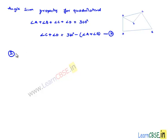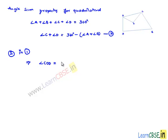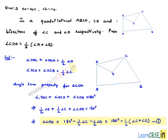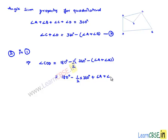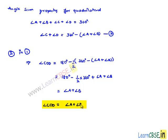Now, substituting equation number 2 into equation number 1, we get angle COD equals 180 degrees minus half times (angle C plus angle D). Replacing angle C plus angle D with 360 degrees minus (angle A plus angle B), we get 180 degrees minus half times 360 degrees plus half times (angle A plus angle B). Since half of 360 degrees is 180 degrees, we have 180 minus 180 plus angle A plus angle B. Therefore, angle COD equals half times (angle A plus angle B). This is the required solution.